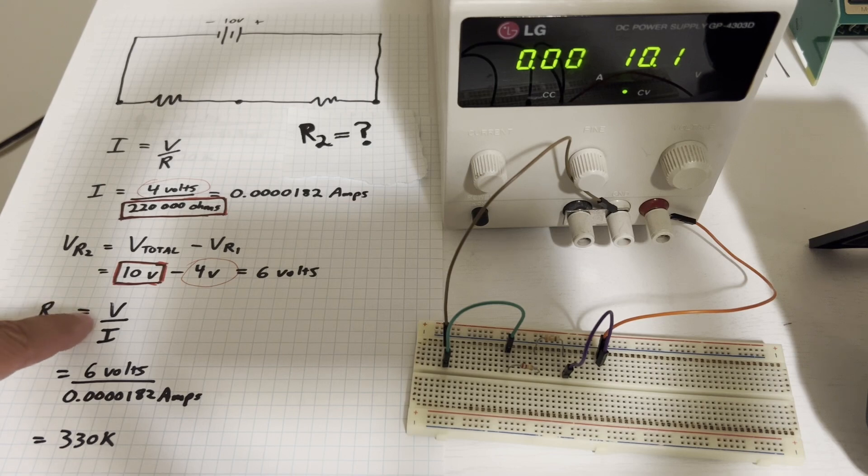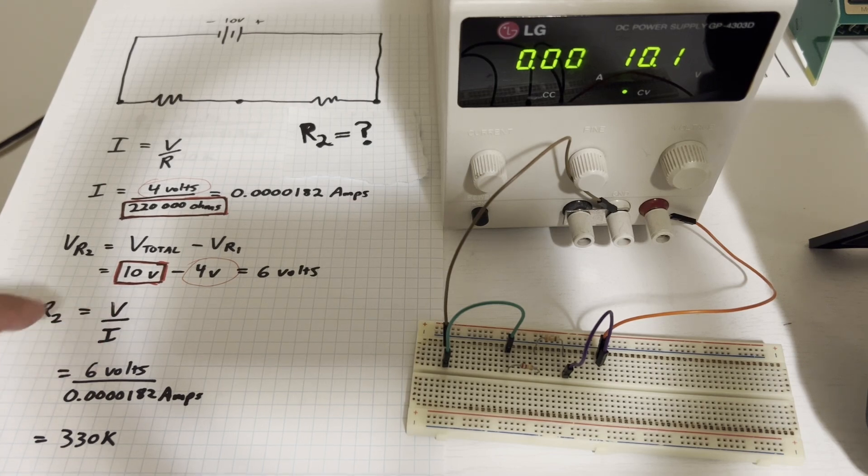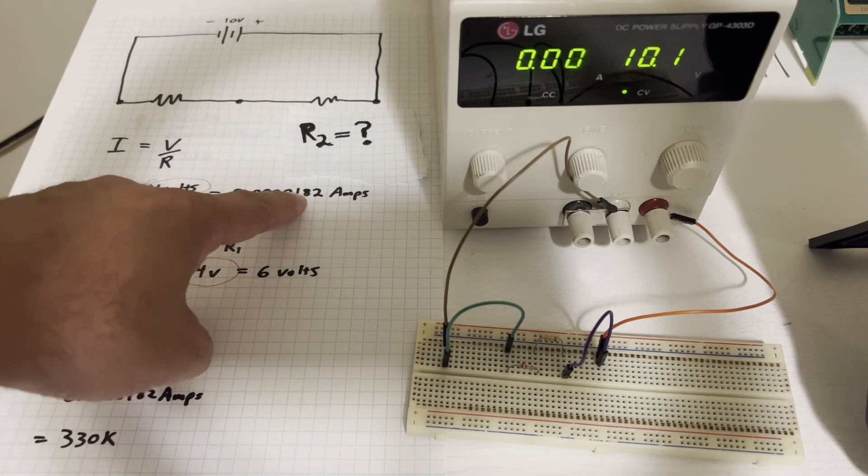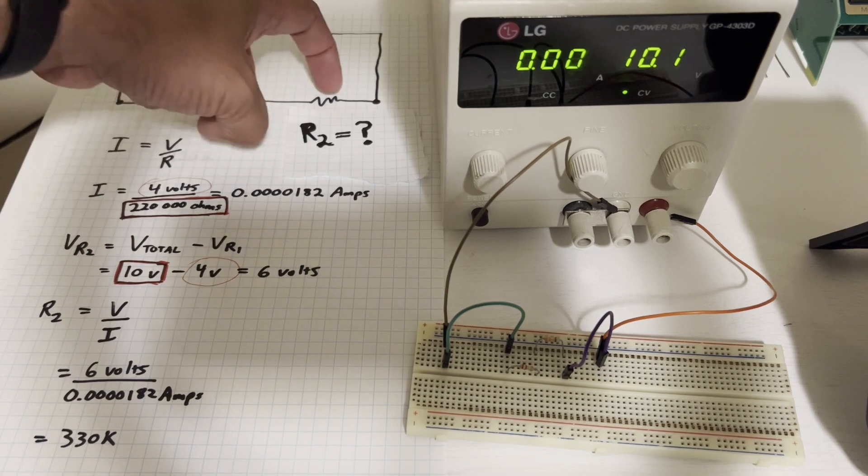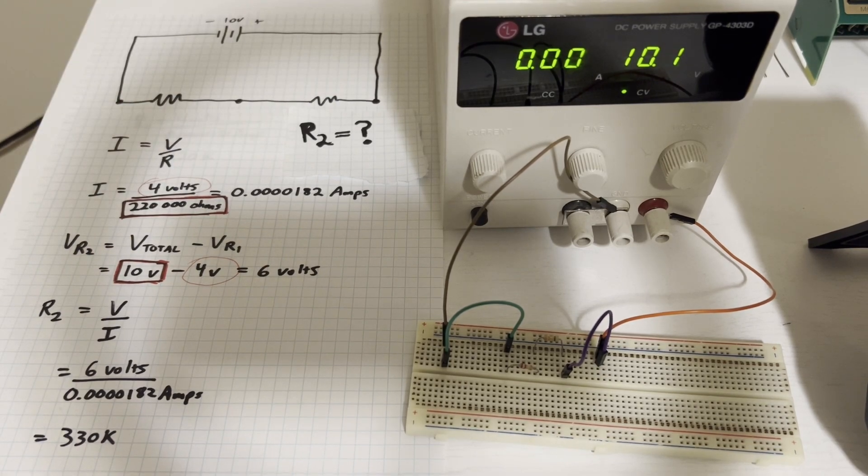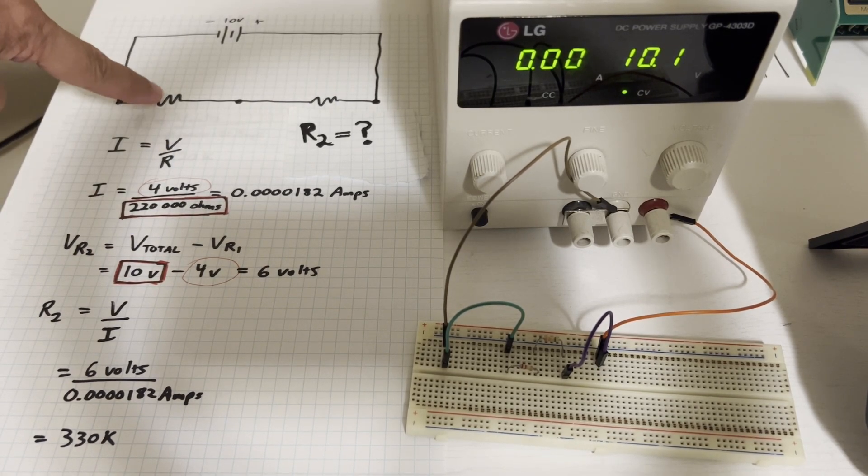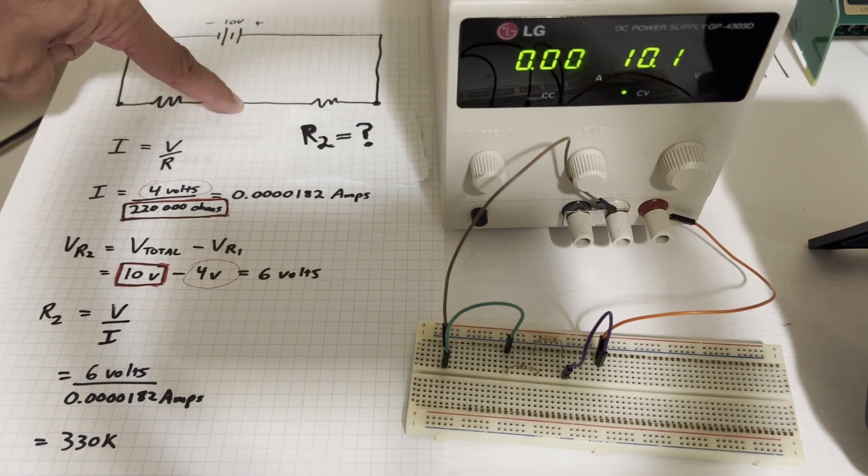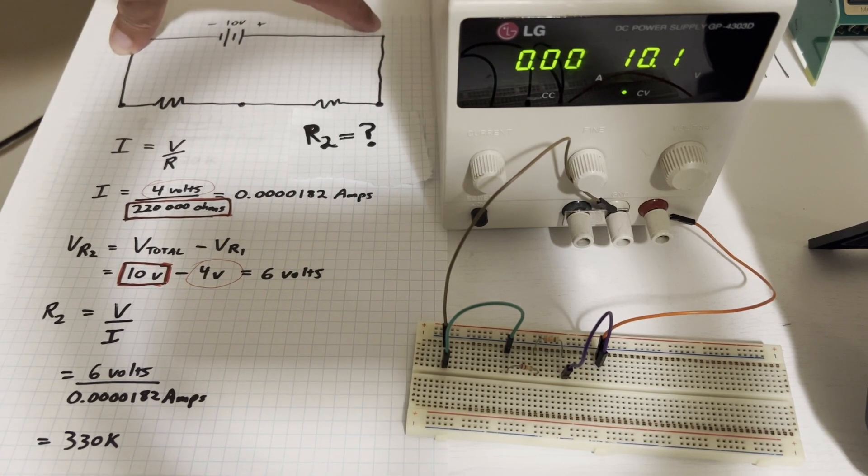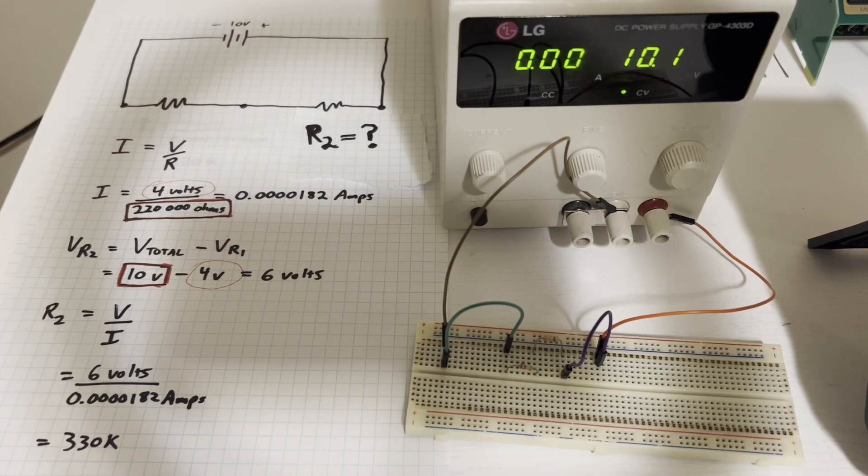So six volts is across R2. Resistance is voltage divided by current. So we calculated that six volts based on our measured four volts. And we have our 18.2 microamps. So resistor R2 is 330k. All we have to know is the value of R1, the voltage of R1, and the total voltage to calculate our R2.